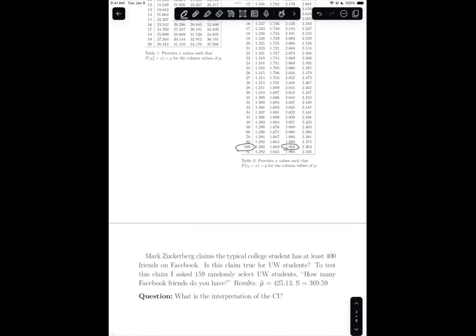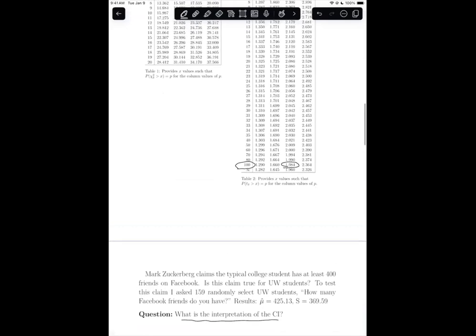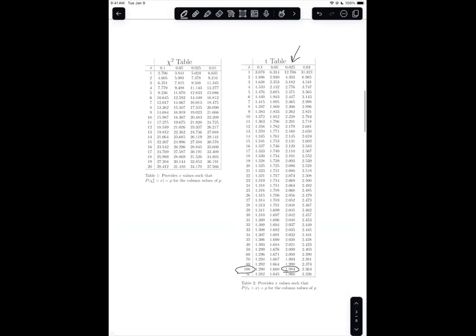So now let's talk, what is the interpretation of the confidence interval? So the reason that we use, we're always going to use the 0.025 column is because we're always going to do a 95% confidence interval.